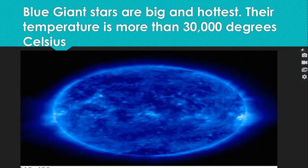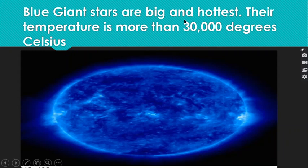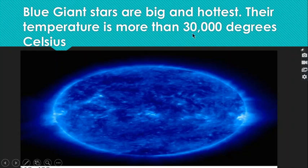Here you can see blue giant stars. The blue giant stars are big and the hottest, and their temperature is more than 30,000 degrees Celsius. These are the biggest and hottest stars and because they have very high temperature, they shine brightly.